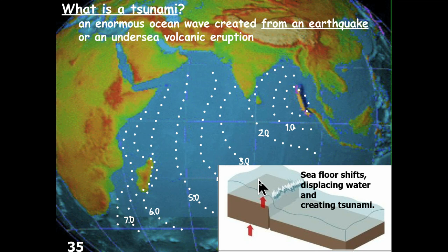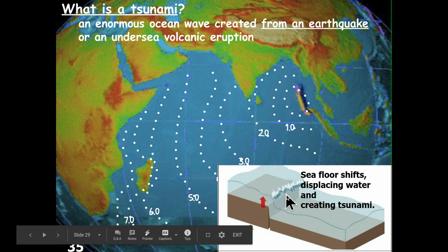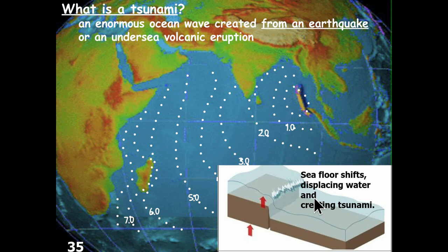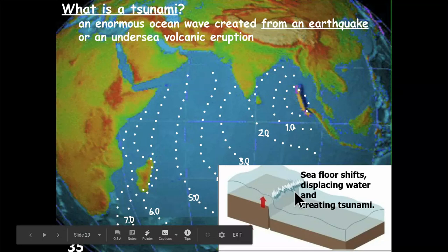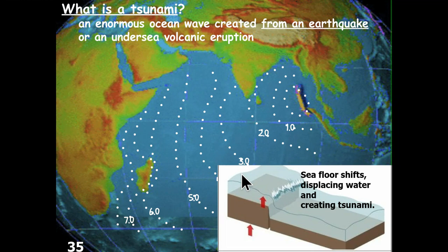Looking at the diagram: if we see the ocean floor where part of it has dropped downward relative to the adjacent section, that creates an underwater void. Water rushes in to fill the displacement, creating essentially an underwater waterfall. As water fills in the void caused by the dropping ocean floor block, water on the shoreline will pull way out — receding significantly — to fill the void. This is a characteristic warning sign of an incoming tsunami.